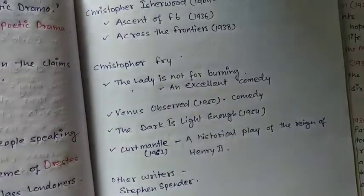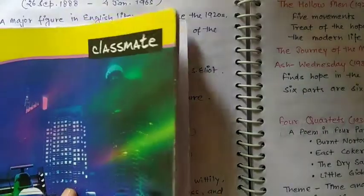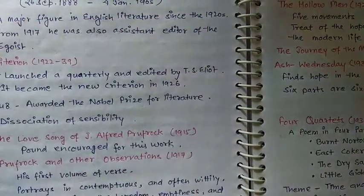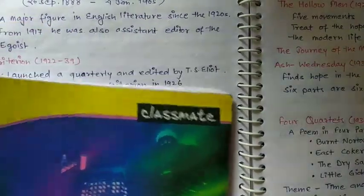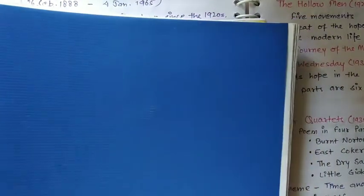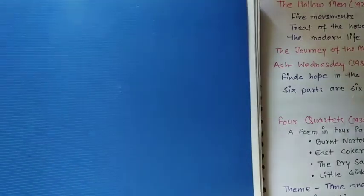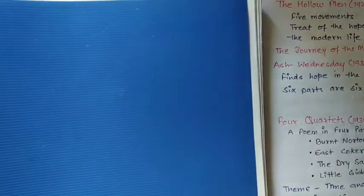Drama in the 20th century includes John Galsworthy and all his works, which is very important for the UP TGT exam, plus G.B. Shaw and Harley Granville-Barker and other dramatists. W.B. Yeats and T.S. Eliot's drama are also included. With that, the History of English Literature notes end, and there are also notes for Literary Criticism — so there are two notebooks you can get if you wish to have them for your exam preparation. Thank you for watching, bye bye, take care, see you in the next video.